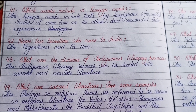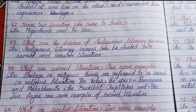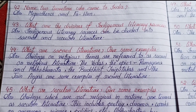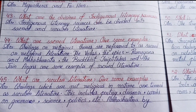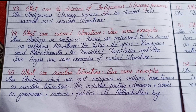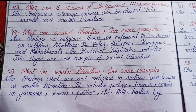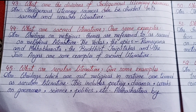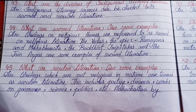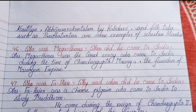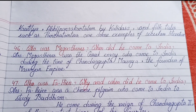Number forty-two: Name two travelers who came to India. Megasthenes and Fa-Hien. Number forty-three: What are the divisions of indigenous literature sources? Indigenous literature sources can be divided into sacred and secular literature. Number forty-four and forty-five: What are examples of secular literature? Writings which are not religious in nature are termed secular literature. This includes poetry, drama, works on grammar, science, politics, etc. Arthashastra by Kautilya, Abhijnanasakuntalam by Kalidasa, and folk tales such as Panchatantra are some examples of secular literature.